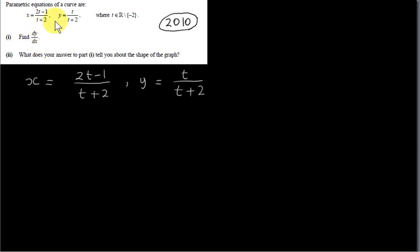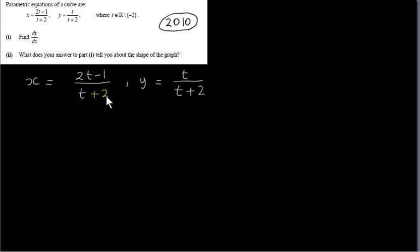Here we have a curve given in terms of a single parameter t. For values of t we can get values of x and y — in other words, we can get points on the curve. t can be any real number except minus 2. The reason it cannot be minus 2 is that we would have division by 0: minus 2 plus 2 in the denominator would give 2t minus 1 divided by 0.